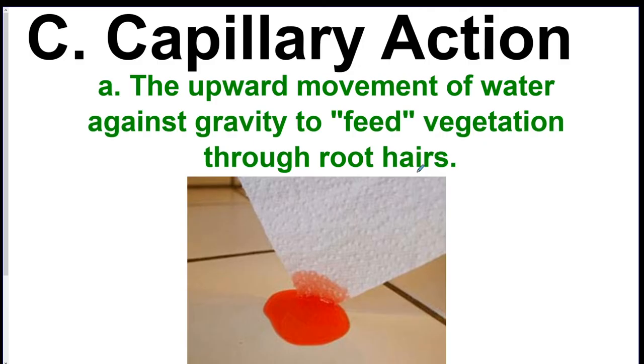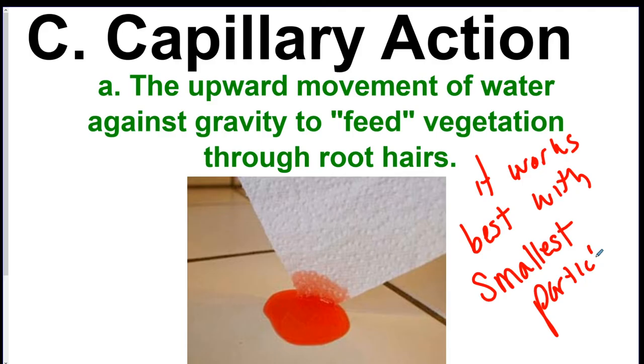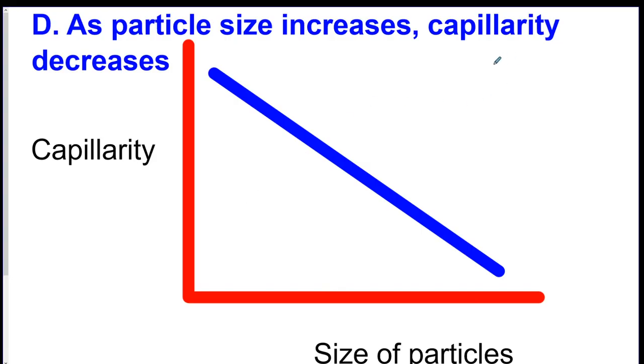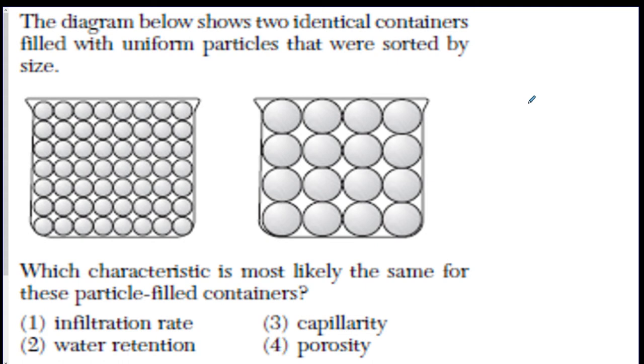Capillary action is when water gets pulled up through soil. In order to have this happen, and a good example is if you hover a paper towel over a little puddle that goes up into the paper towel. It works best with the smallest particles. You need a lot of particles to be really close together and it will pull up the water naturally. It occurs because water is very sticky. The smaller the pores, the higher the water will end up rising. This is the key. So as particle size increases, capillarity, which is another word for capillary action, goes down. Which characteristic is most likely the same for these two containers? Let's go through what these mean. Infiltration rate is the speed that water seeps through.